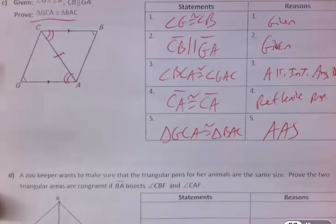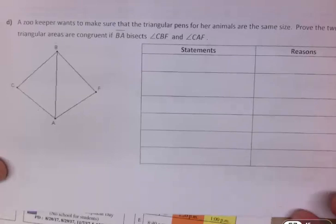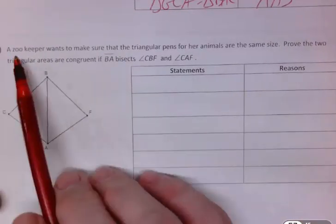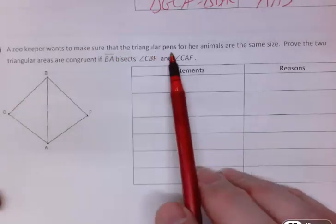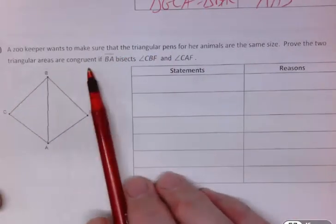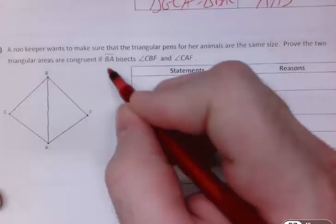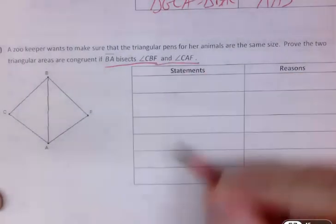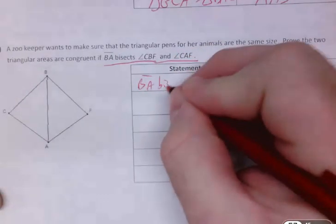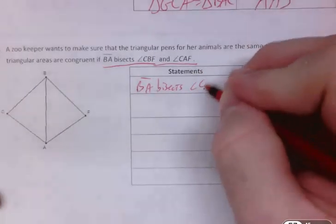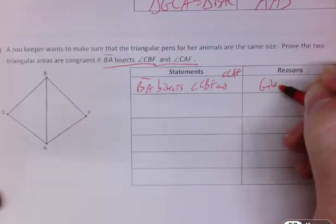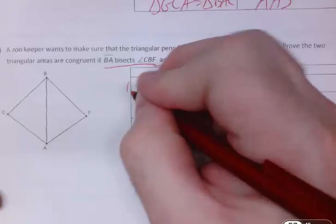Okay, and last one, you've got sort of an application problem. But it really just boils down to basic proof. A zookeeper wants to make sure the triangular pens for her animals are the same size. Prove the two triangle areas are congruent if BA bisects angle CBF and CAF. So BA, segment BA bisects, and we talked about that before, for angle CBF and angle CAF. That's given, and that's one.